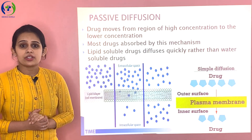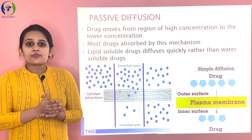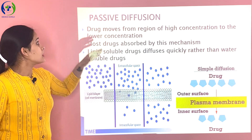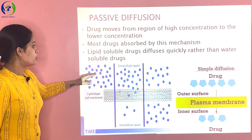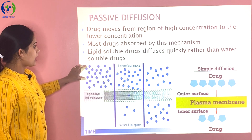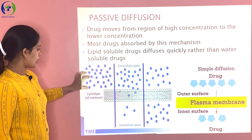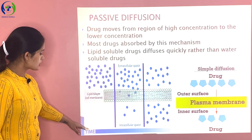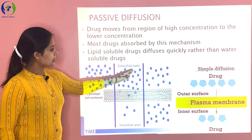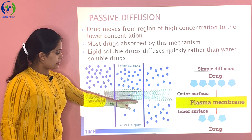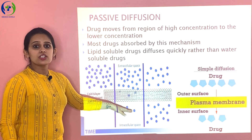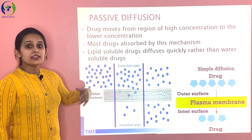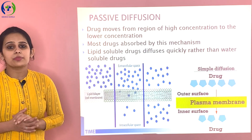What is passive diffusion? In chemistry we learned that molecules diffuse from a high concentration area to a low concentration area. The same applies to the passive diffusion of drugs. The drug is present in high concentration in the extracellular space; as time passes, it diffuses through the lipid membrane into the intracellular space — the region of low concentration. Lipid soluble drugs diffuse more quickly than water soluble drugs, and almost all drugs are absorbed by this mechanism.